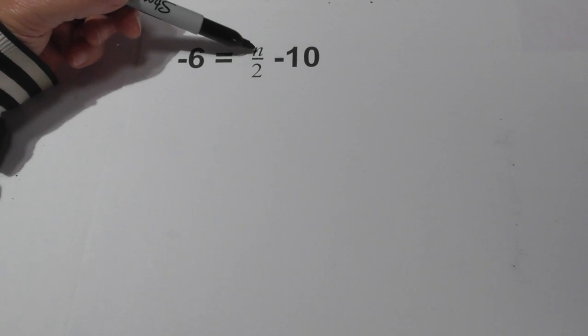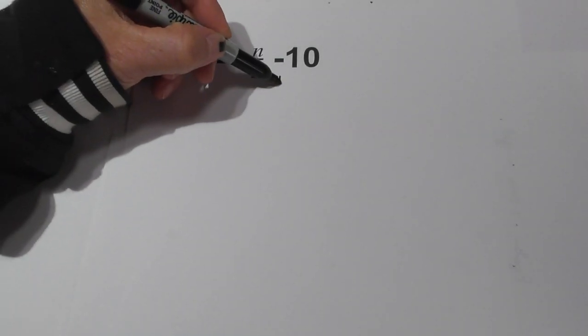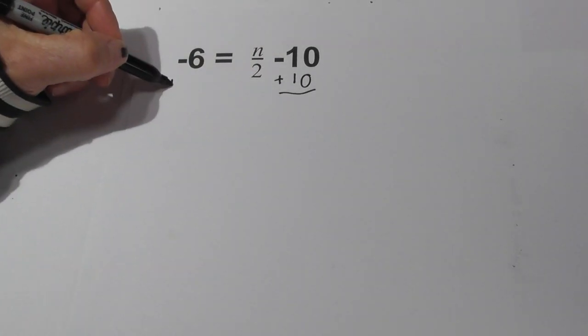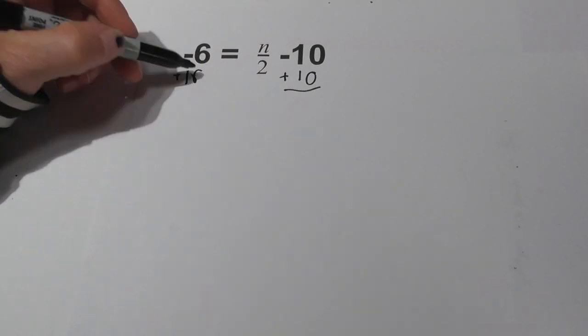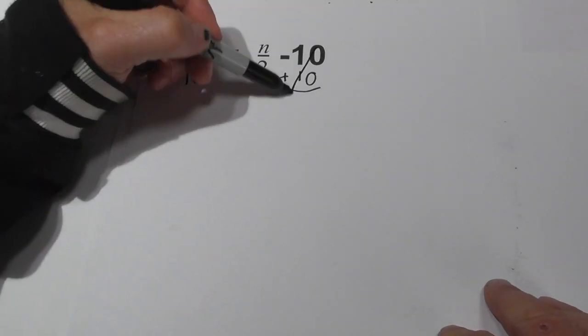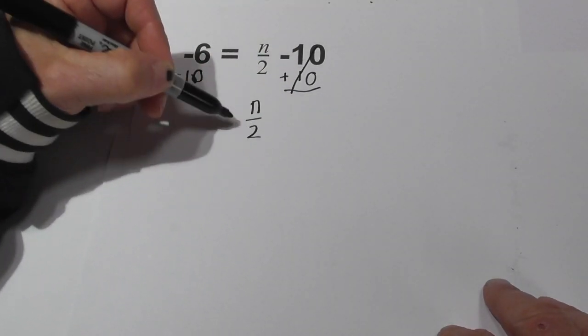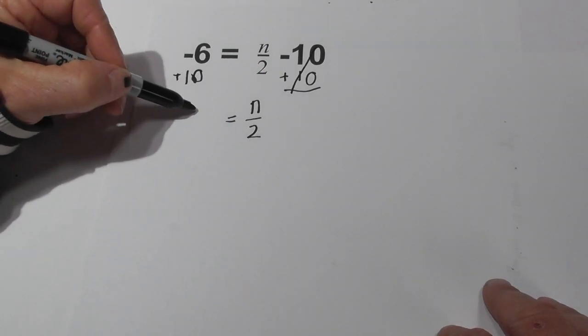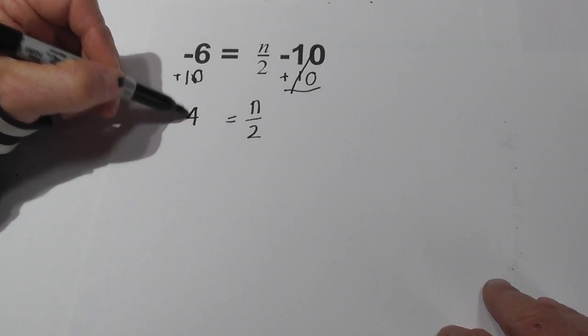Let's first try to isolate the variable n. We can do this by adding 10 to both sides, an opposite operation. So when we do this, these cancel. We bring down n over 2 equals a negative 6 and a positive 10, which will be a positive 4.